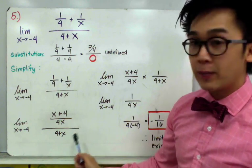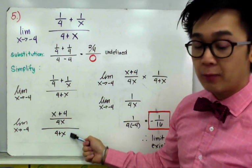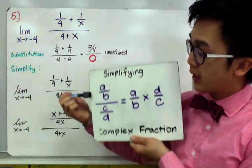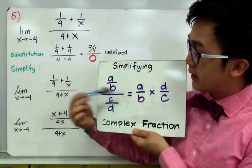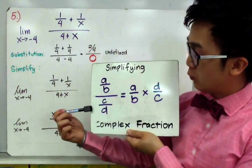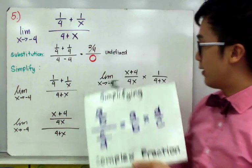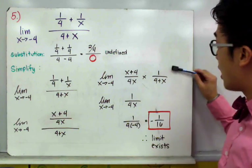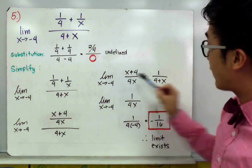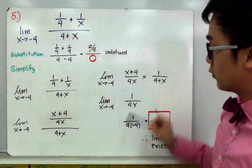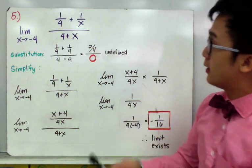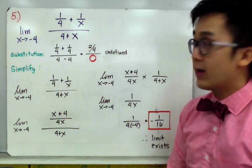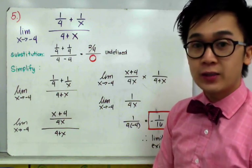The fraction is still complex, so we multiply by the reciprocal of the denominator: x plus 4 over 4x times 1 over 4 plus x. We can cancel x plus 4 and 4 plus x, leaving 1 over 4x. By direct substitution with x equals negative 4, the limit equals negative 1/16. Therefore the limit exists. That is how we evaluate limit functions using the different techniques seen today: factoring, sum of cubes, conjugate, and complex fraction simplification.